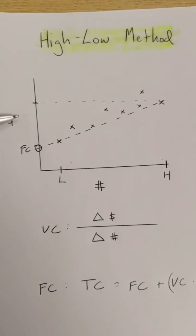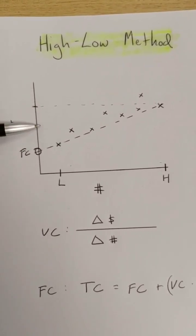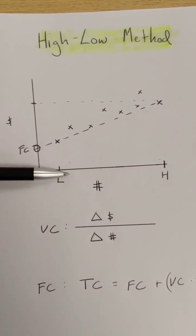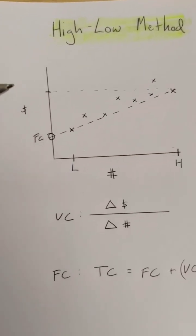So the variable cost would be the change in costs divided by the change in units, our estimated variable costs.